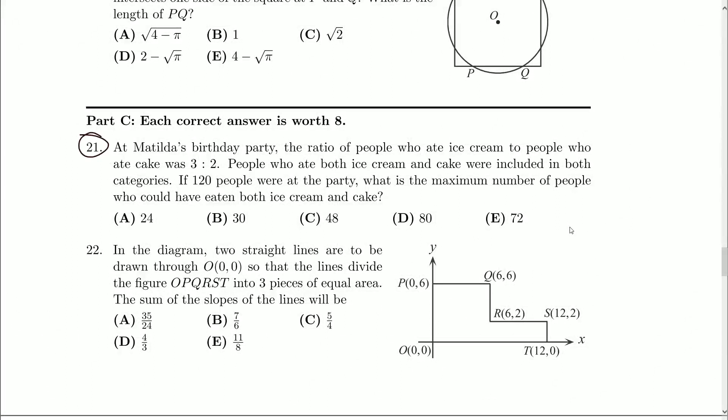At Matilda's birthday party, the ratio of people who ate ice cream to people who ate cake was 3 to 2. People who ate both ice cream and cake were included in both categories. If 120 people were at the party, what is the maximum number of people who could have eaten both ice cream and cake?